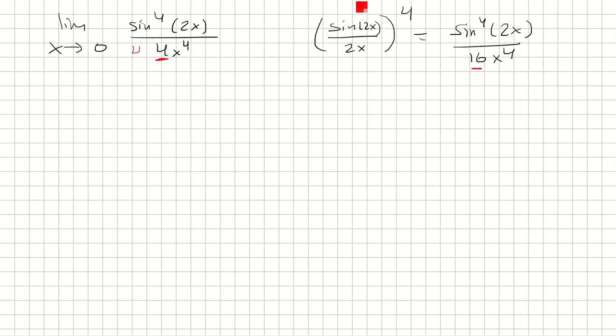So what I need to do is multiply this on the bottom by 4, and then I also have to multiply the top by 4 to cancel it out.